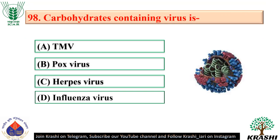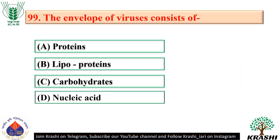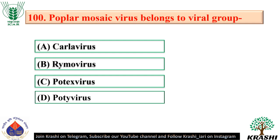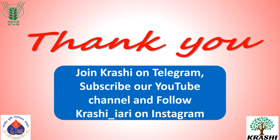Question number 98: Carbohydrate-containing virus is influenza virus — option D. Question number 99: The envelope of viruses consists of lipoproteins — option B. Question number 100: Popular mosaic virus belongs to the viral group carla virus. That was it — thank you, see you next time.